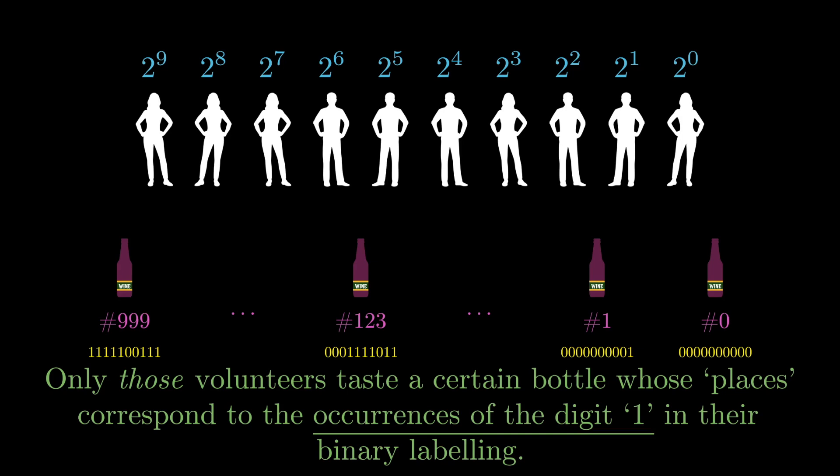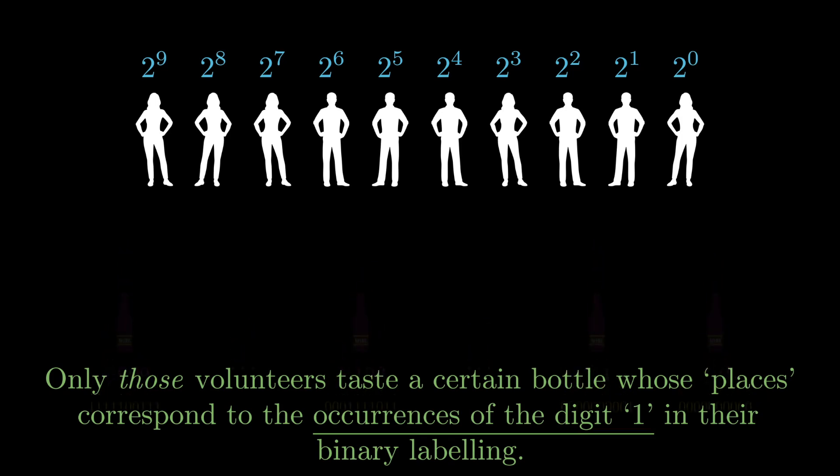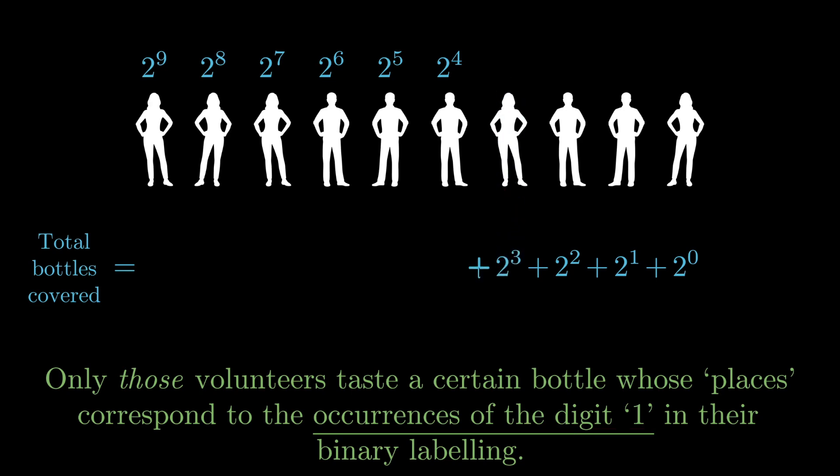And we essentially do this for every single bottle and this is where it becomes crucial that there are only two digits in binary, because for every bottle any given volunteer has either tasted it or not tasted it, that is the digit corresponding to them is either zero or one. And right away we see that because there are ten places there are a total of 1024 bottles that can be tasted, and this is easy enough to prove because you simply add up one plus two plus four plus eight plus sixteen plus thirty two plus sixty four plus one twenty eight plus two fifty six plus five hundred and twelve which gives one zero two three, and then you add another one because you start counting bottles at bottle number zero not at bottle number one. And obviously if you had one volunteer less you'd be short by five hundred and twelve.